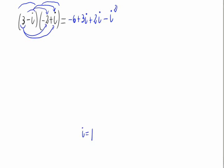We have to remember that i equals square root of minus 1. So i squared would be square root of minus 1 squared. The square root and the squared cancel. So i squared equals negative 1.